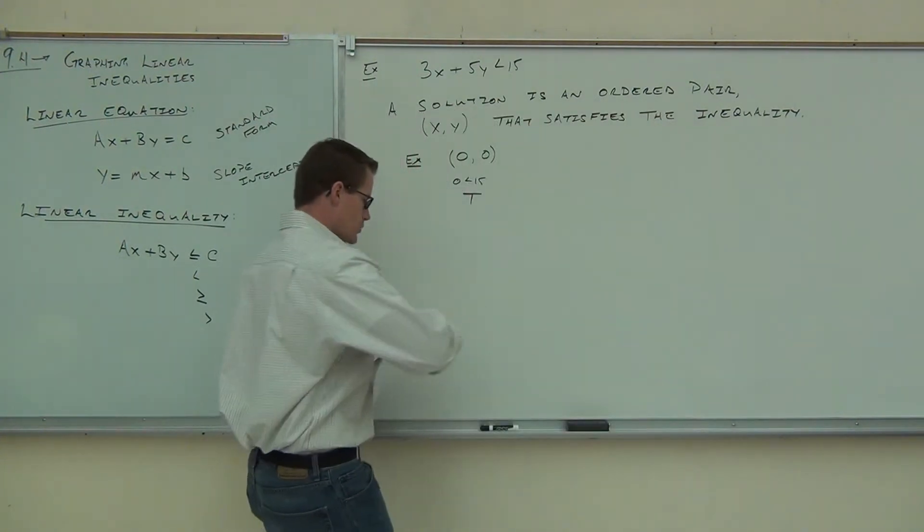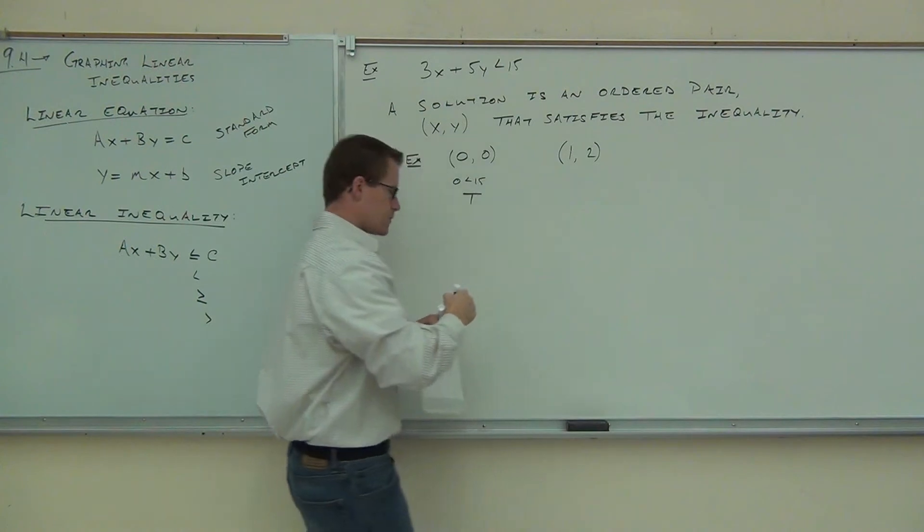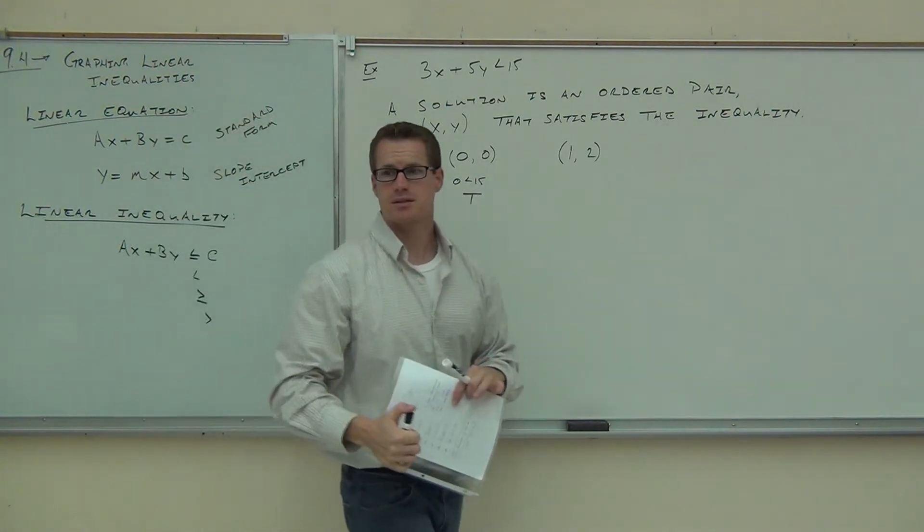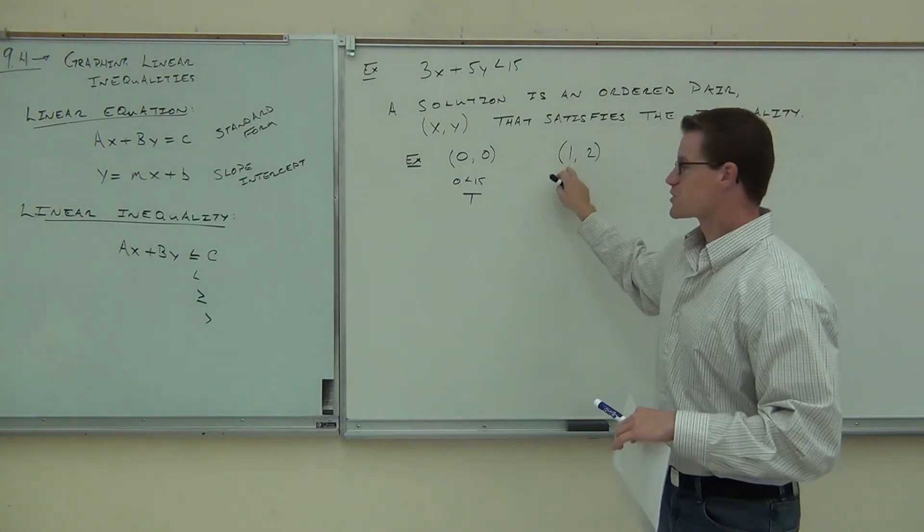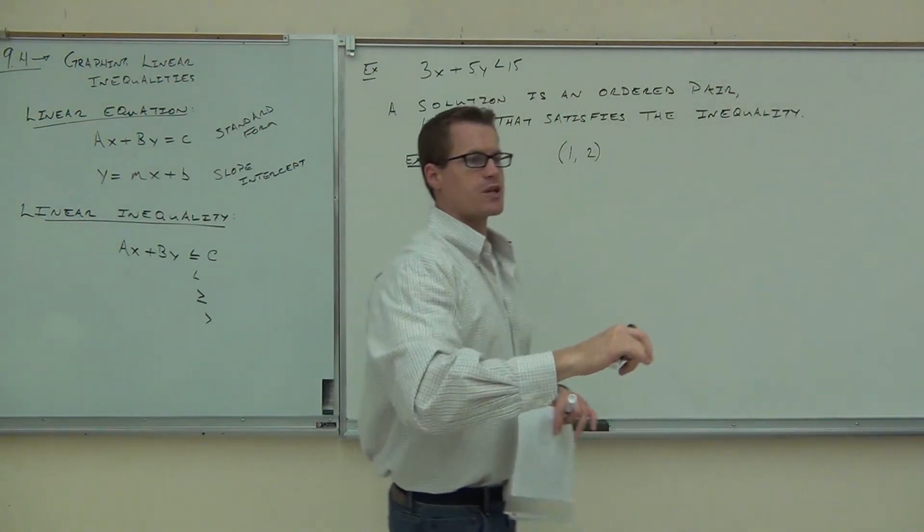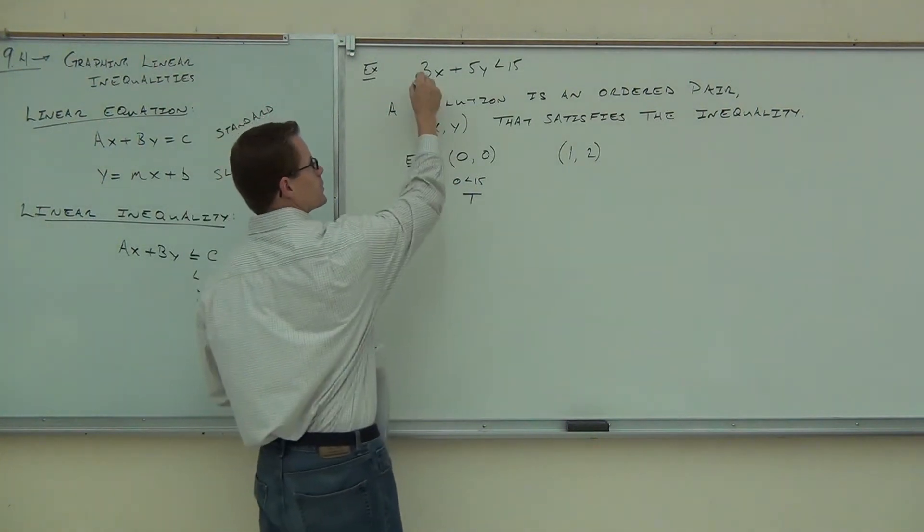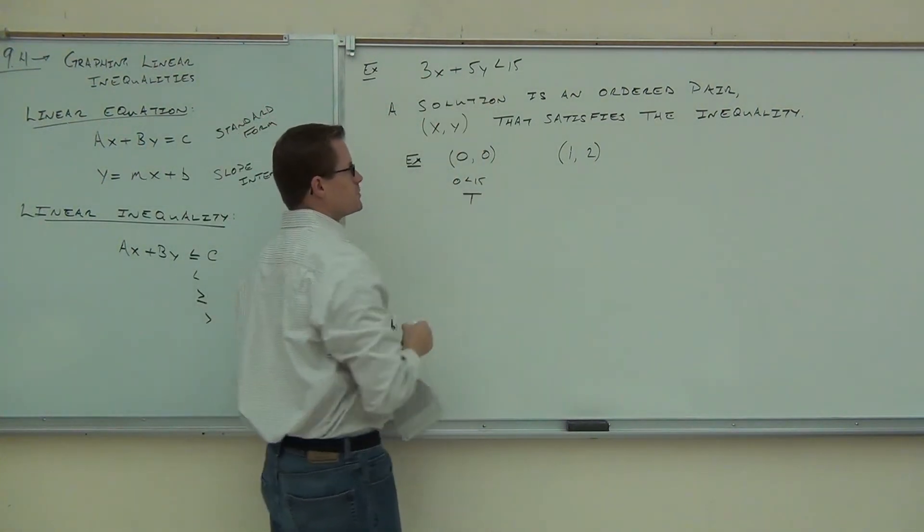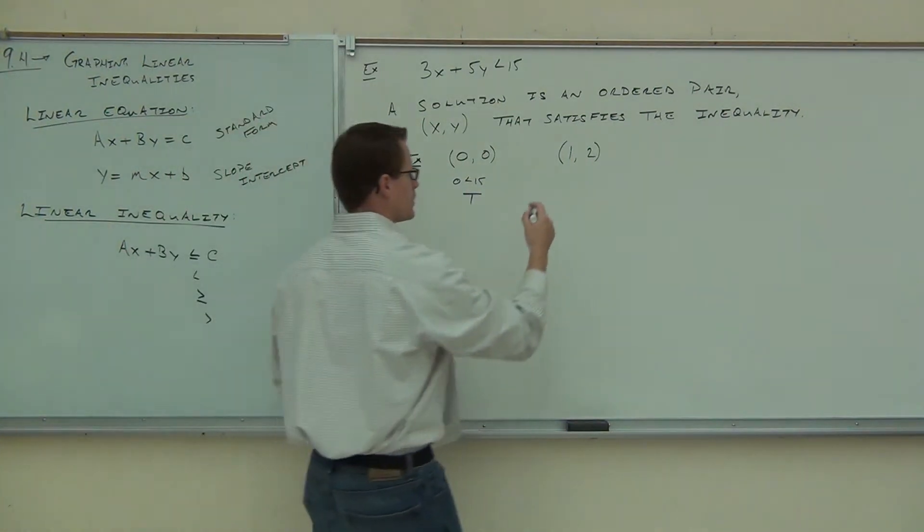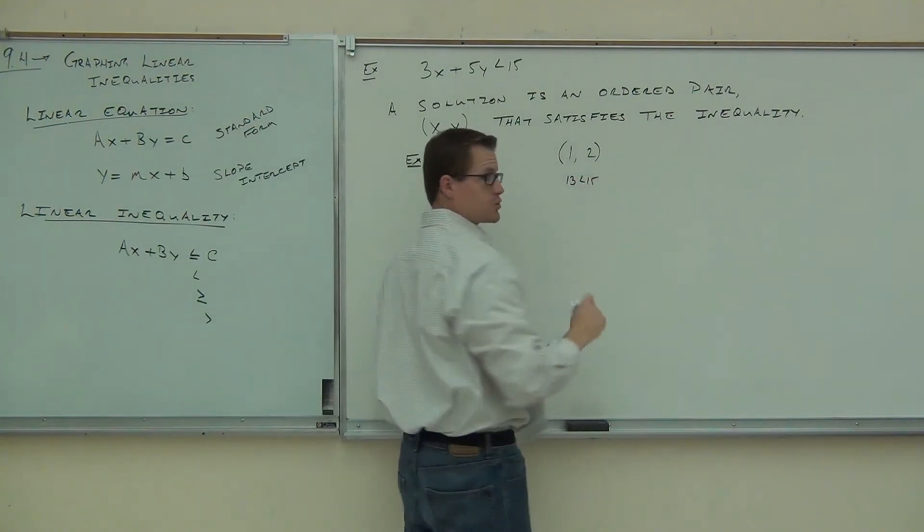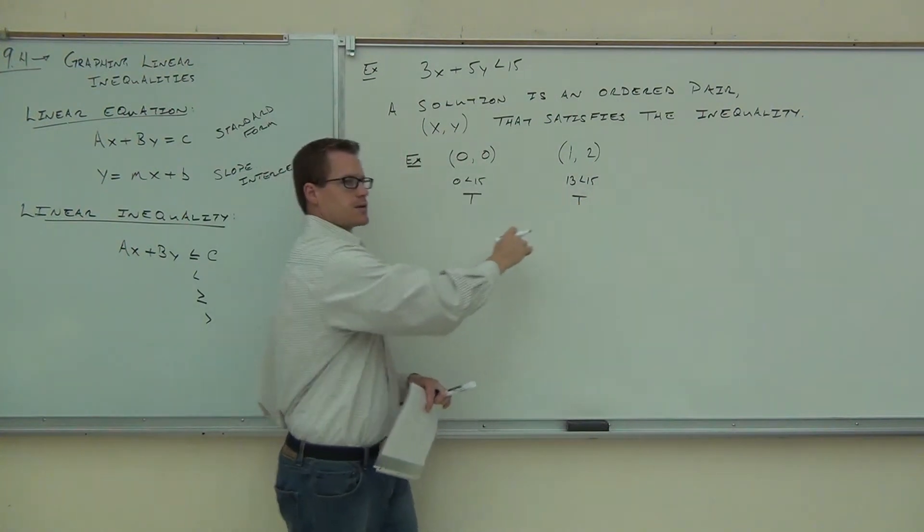Let's try a couple more. Let's try one comma two. In this case, how much is our x? One. Our x is hopefully just one. How much is our y? Two. Plug those numbers in. See what you get on the left-hand side. So we're going to do three times one plus five times two. Three times one plus five times two. How much did you get there? 13 < 15. Is that a true statement? So far, if we've made a true statement, this is a solution, this is a solution.